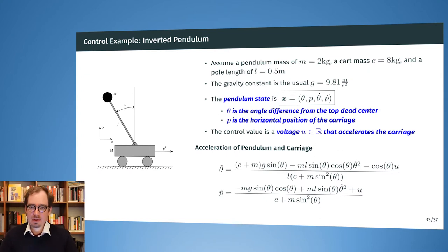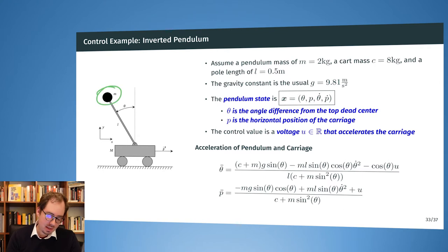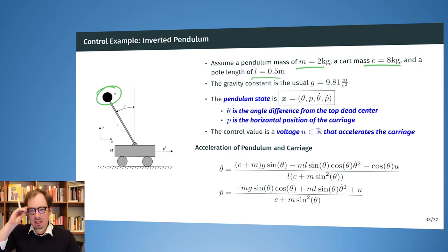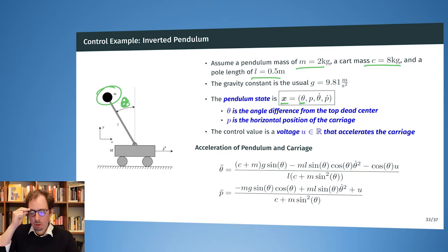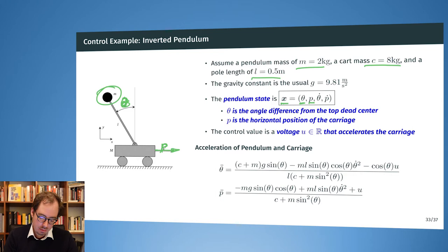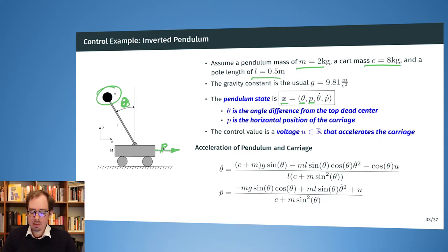The inverted pendulum: a pole with a mass sitting on a cart. The mass is 2 kg, the cart mass is 8 kg, and we have a pole of 50 cm, plus the usual gravity constant. The state vector x has four components: the angle (how much the pendulum deviates from the upper top dead center), the position of the cart on the horizontal axis, and also the angular speed and the cart's velocity. Speed is important because in a physical system there is momentum, which we must consider when describing the coming evolution of the system state.